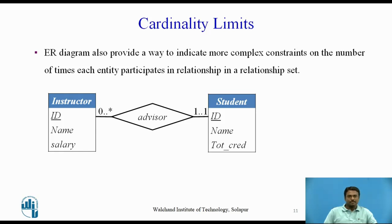Entity relationship diagrams also provide a way to indicate more complex constraints on the number of times each entity participates in relationships in a relationship set. A line may have an associated minimum and maximum cardinality shown in the form L..H, where L is the minimum and H is the maximum cardinality. A minimum value of 1 indicates total participation of the entity set in the relationship set. A maximum value of 1 indicates that the entity participates in at most one relationship, while a maximum value of star indicates no limit.